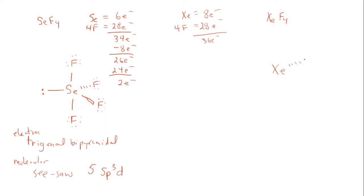We place xenon in the middle and form four bonds with the fluorines, assigning eight electrons — two in each bond. We just used eight electrons, leaving twenty-eight electrons remaining.